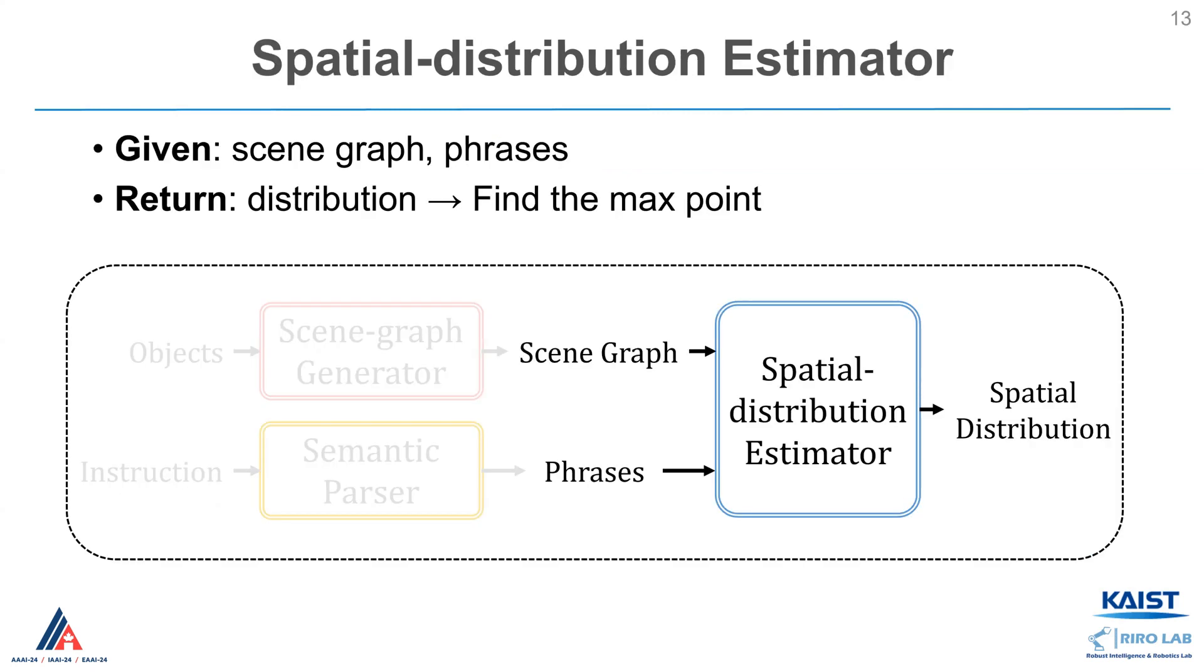The last module is the spatial distribution estimator. Given a scene graph and phrases generated by previous modules, the estimator module returns a spatial distribution. Then, we can identify the desired location by finding the point with the maximum probability within the distribution.